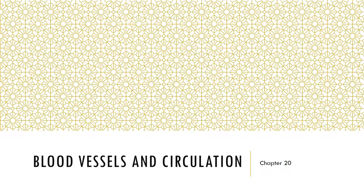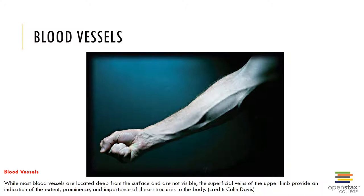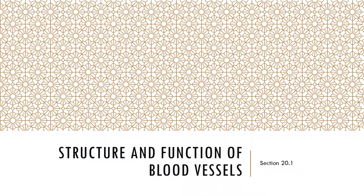In chapter 20 we will continue our study of the cardiovascular system focusing on blood vessels and circulation. Blood vessels are the conducting tubes that distribute the blood. There are three primary types of blood vessels in the human body: arteries, capillaries, and veins. Let's look at the structure and function of blood vessels first.